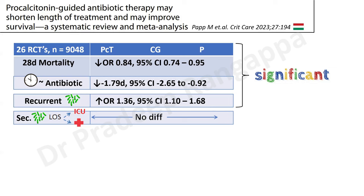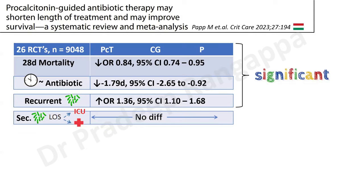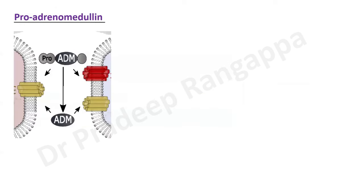The take-home message: procalcitonin is here to stay. It is a very important biomarker to de-escalate or stop antibiotics sooner — by day five, or when levels drop to less than 80% of baseline or less than 0.5 micrograms per liter.